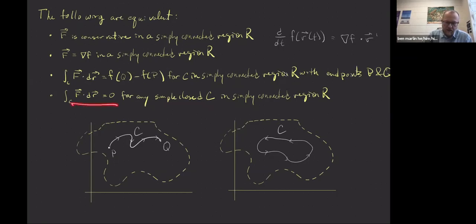And then finally, that if you have a simple closed curve, in other words, it makes a loop in a simply connected region R, that you're always going to get zero. Now if you think about this one in terms of that one, if you've got a simple closed curve, you've made a loop, your start and your end point are the same points. So when you subtract them, you should get zero. So seeing that these two are equivalent is really no problem.